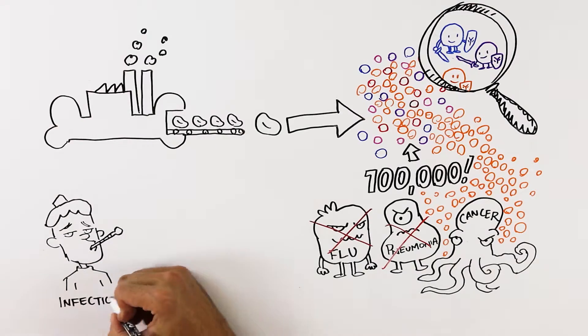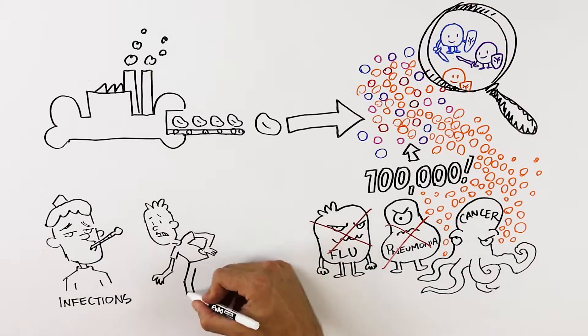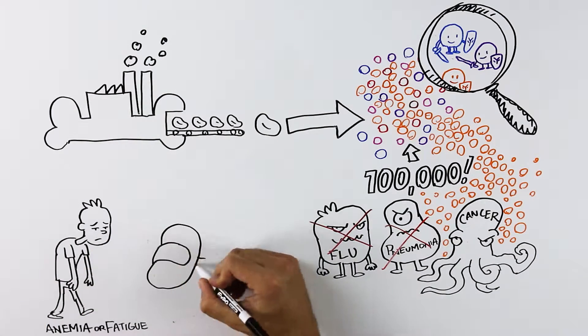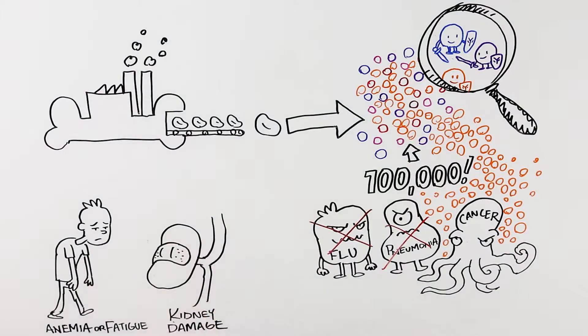This can cause frequent infections, a buildup in bone leading to bone pain and fractures, anemia which causes fatigue, and kidney failure because high levels of protein are in the blood and urine.